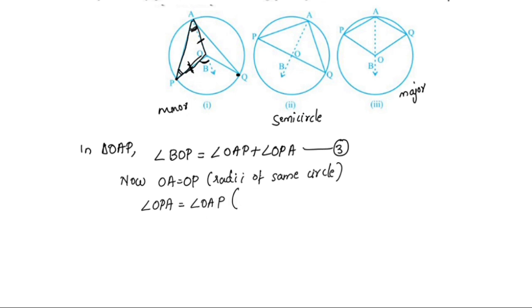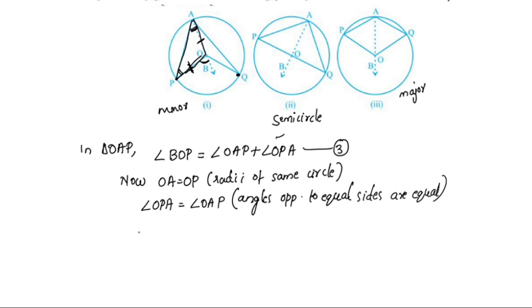Angles opposite to equal sides are equal. Substituting equation number 3, angle BOP is equal to 2 times angle OAP.